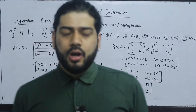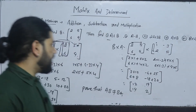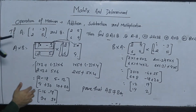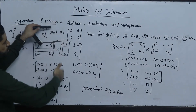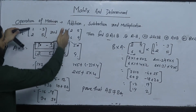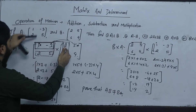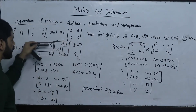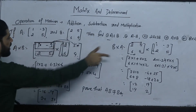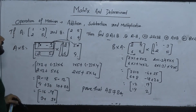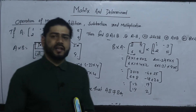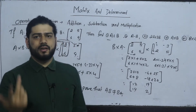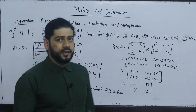For multiplication of a 2×2 matrix, the first matrix row multiplied by the second matrix column. First row multiplied by the column, second row second column, giving a 2×2 result.